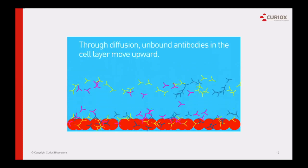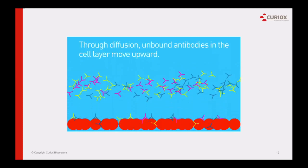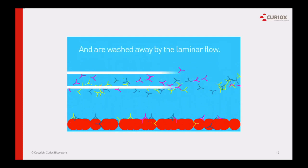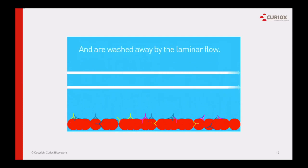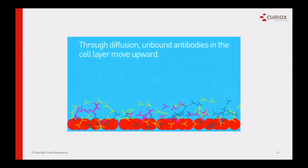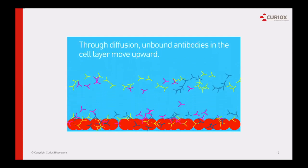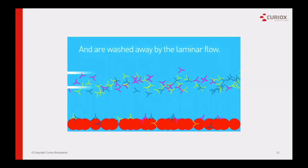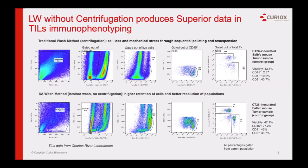When the same dispensing and aspiration is performed with a conventional walled plate, the action causes turbulence which lifts the cells from the bottom. So it's a combination of the wall-less well shape and controlled flow. Now, in the next couple of slides before I turn it over to Jorgen, I want to quickly highlight some data we've run with collaborators and customers, which will complement some of the data Jorgen will present.